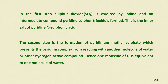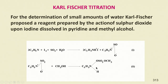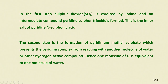The second step is the formation of pyridine methyl sulfate, which prevents the pyridine complex from reacting with another molecule of water. In the second reaction, all valences are complete, so there is no chance for further reaction. The addition of pyridine methyl sulfate prevents the complex from reacting with another molecule of water because all the pyridine, iodine, and sulfur are consumed.